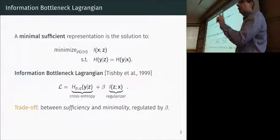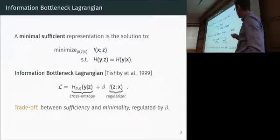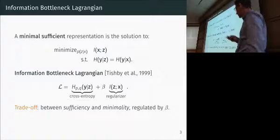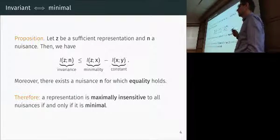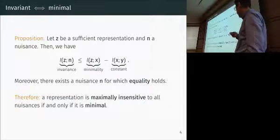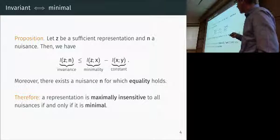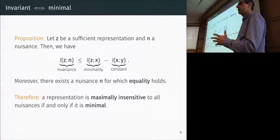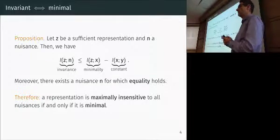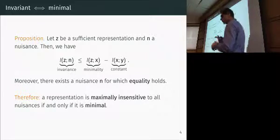This formalizes sufficiency and minimality. Now, you can prove easily that if you have a sufficient representation, it is minimal if and only if it is invariant. One direction is easy; the other requires showing there always exist nuisances achieving the bound. Essentially, if you minimize the information the representation contains about the data while still being sufficient, you also minimize the information it contains about nuisances. The intuition: you first throw out what you don't care about, and keep everything that depends on the task. Going for sufficiency and minimality gives you invariance for free.